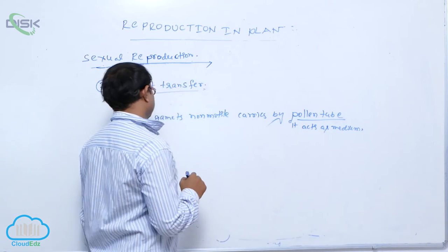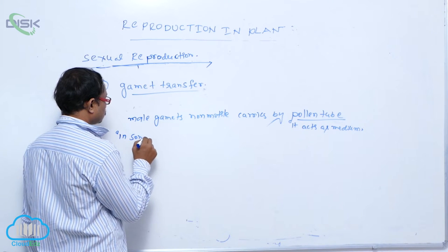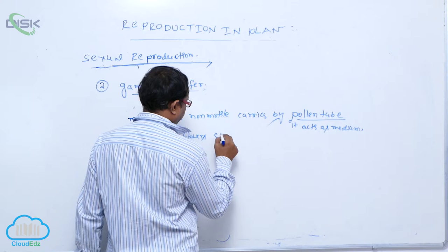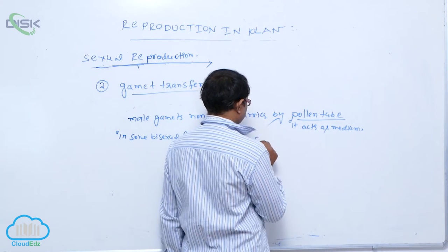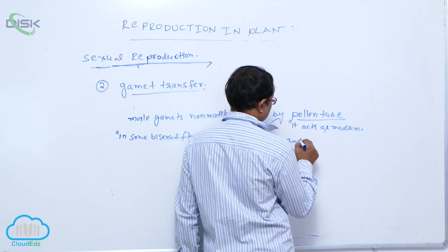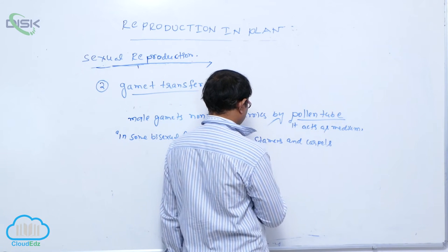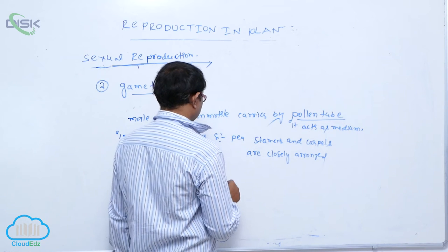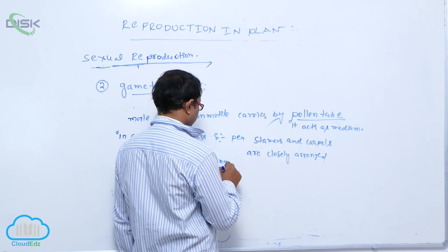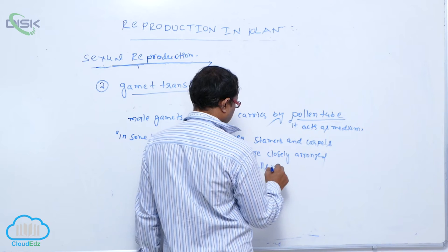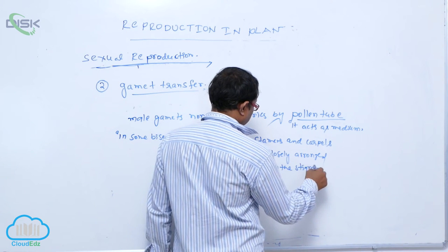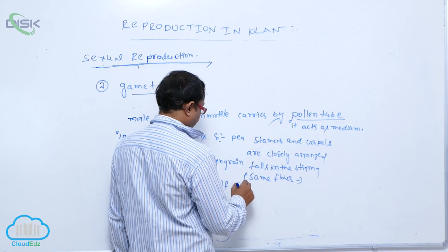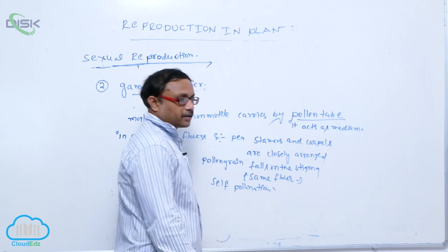For example, in some plants, in some bisexual flowers, example in pea, stamens and carpels are closely arranged. Easily, pollen grains fall on that stigma of the same flower. That is known as self-pollination. There is no agents required, any process required.